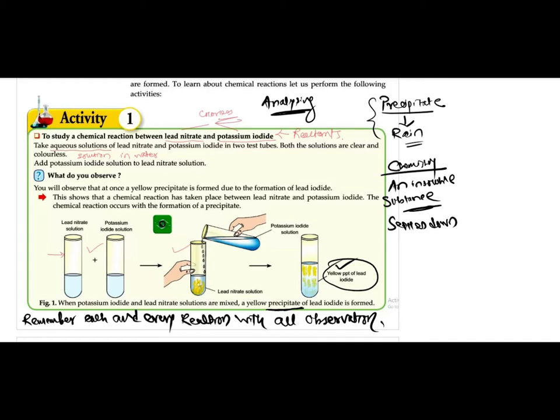We got to know that new substances are forming with the help of certain physical changes, like change of color. In the case of lead iodide, which was yellow in color, it formed when lead nitrate and potassium iodide were mixed. We also learned a new word — precipitate.